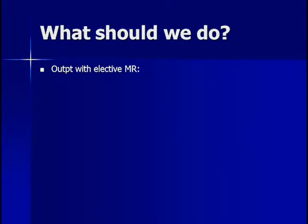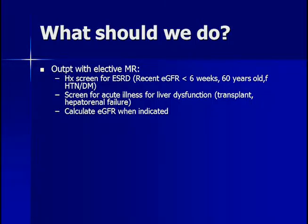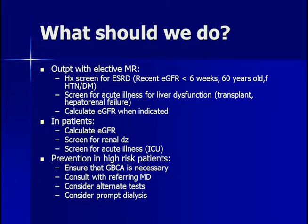What should we be doing? In outpatients here for elective MRI, screen using a history questionnaire for end-stage renal disease and for acute recent illness including liver dysfunction. Calculate estimated GFR when indicated — in diabetic, older patients, or those who have not passed questionnaires. For inpatients, calculate eGFR for each patient and screen for renal disease, as well as for ICU patients with acute illness such as hepatorenal disease. Try to prevent performing gadolinium-enhanced MRI in high-risk patients: first determine that gadolinium is required, consult with the referring physician, consider alternate tests, and consider prompt dialysis, although dialysis has not been shown to necessarily prevent NSF in all cases. Peritoneal dialysis is not helpful.